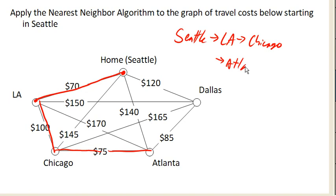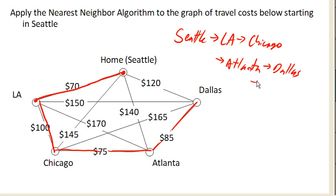Atlanta. And then we really only have one option at this point, and that's to go to Dallas, because it's our only unvisited city. And from there we'll return home to Seattle. And that completes our circuit. Now we've visited every city.